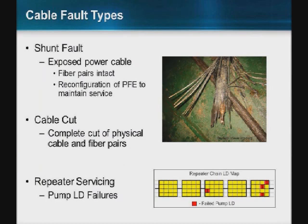These are some common fault types. A shunt fault is when the power conduit is exposed to the ground potential of the sea. Fiber pairs remain intact, and the PFE has to reconfigure and rebalance to maintain service, but the segment can remain in service until you can get a ship out to do the repair. A cable cut is a complete cable cut of the segment — obviously the segment is taken down at that point. Repeaters, as highly available and reliable as they are with redundant components protecting against laser diode failures, may in some instances have a catastrophic event that damages the repeater, requiring you to bring a ship out to service, repair, or replace it.